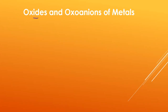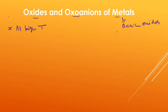Today, we shall discuss oxides and oxo-anions of metals under the d-block elements. Generally, oxides are formed at a higher temperature — metal reacts with oxygen to form oxides at higher temperature. Usually, metals form basic oxides and non-metals form acidic oxides.